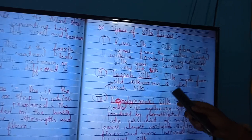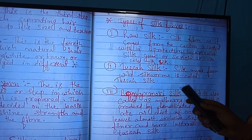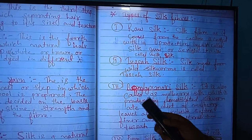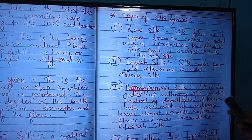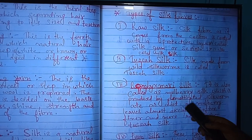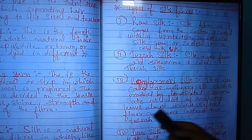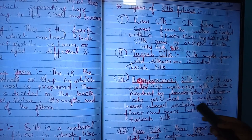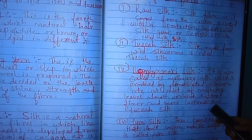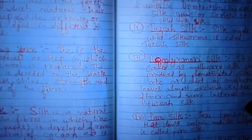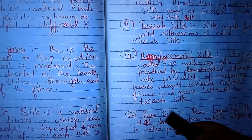Second: tasar silk. Silk made from the wild silkworm is called tasar silk. Third: Bombyx mori silk, also called mulberry silk, which is produced by the domesticated silkworm fed on a diet of mulberry leaves almost exclusively — making it softer, finer, and more lustrous than tasar silk.